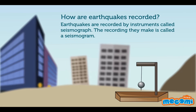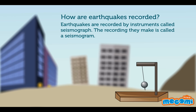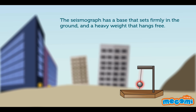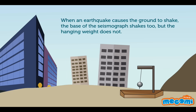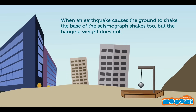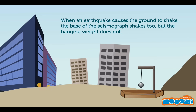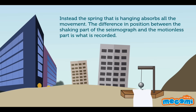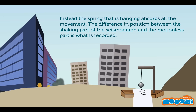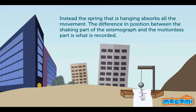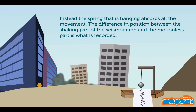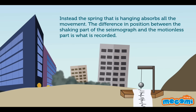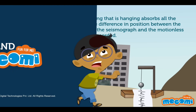How are earthquakes recorded? Earthquakes are recorded by instruments called seismographs. The recording they make is called a seismogram. The seismograph has a base that sets firmly on the ground and a heavy weight that hangs free. When an earthquake causes the ground to shake, the base of the seismograph shakes too, but the hanging weight does not. Instead, the spring that is hanging absorbs all the movement. The difference in position between the shaking part of the seismograph and the motionless part is what is recorded.